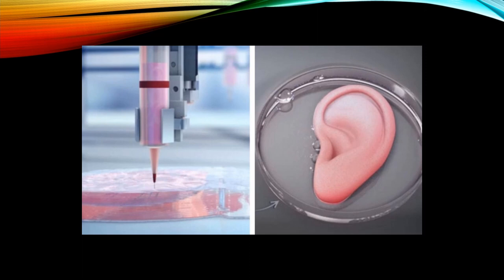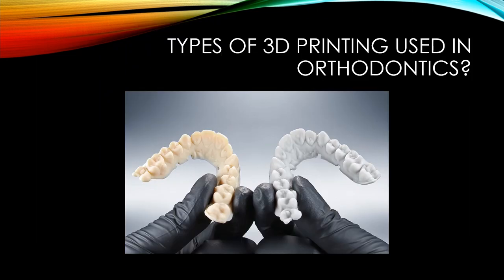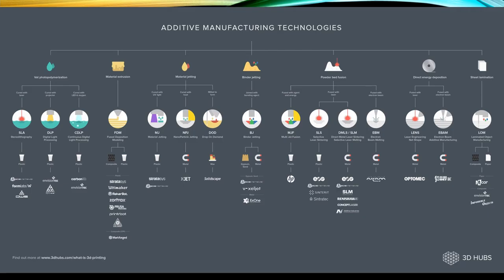3D printing can be used in all sorts of applications. Some researchers have even started 3D printing organs, printing the scaffold of the organ's shape and then allowing cells to invade it. Even food can be 3D printed. Now let's talk about the types of 3D printing used in orthodontics.